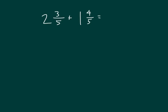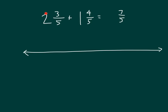Here we have another problem: two and three fifths plus one and four fifths. Let's use a number line to solve this. Three fifths plus four fifths equals seven fifths, and two plus one equals three. Since the sum will be above three, our number line goes from zero to five.